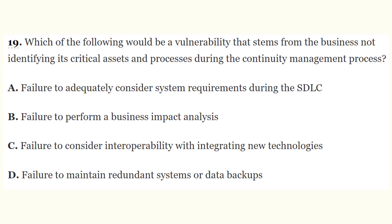Question 19: Which of the following would be a vulnerability stemming from the business not identifying its critical assets and processes during the continuity management process? The correct answer is B — failure to perform a Business Impact Analysis (BIA).